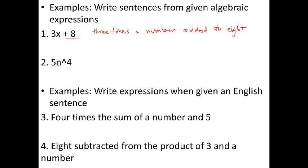How about this one? This is 5 times n to the 4th power. So this would be a product, because we're multiplying, a product of 5. And this is a number multiplied by itself 4 times. So right here you'd say, a product of 5 and a number multiplied by itself 4 times.